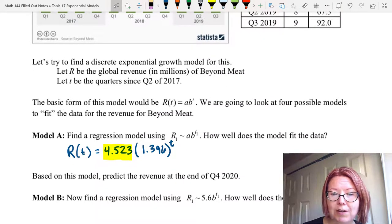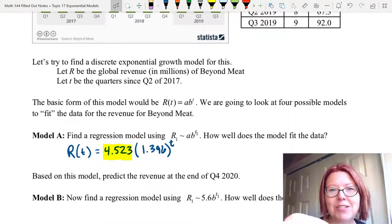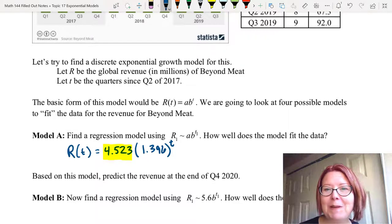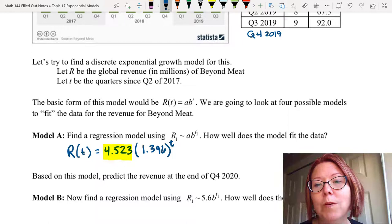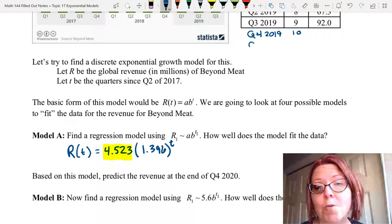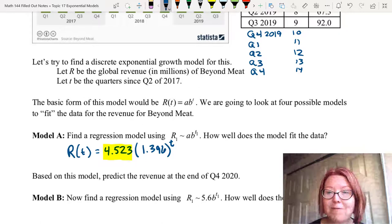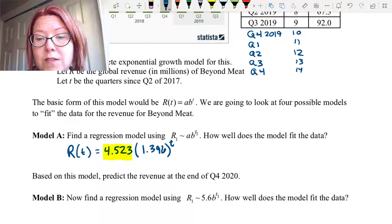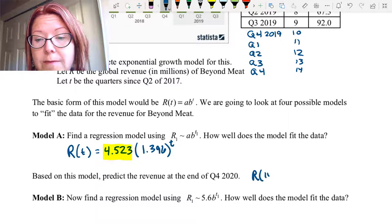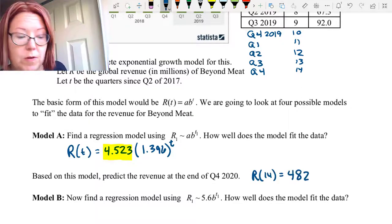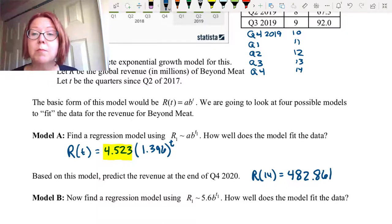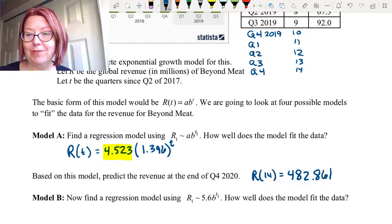In fact, we're going to predict the revenue at the end of quarter 4 2020. And you may want to run the table down just a little bit more to see what value of t that would be. Quarter 4 of 2019 would be t value of 10. So then we would go quarter 1 of 2020, quarter 2 of 2020, quarter 3 of 2020, and quarter 4 of 2020, which would be times of 11, 12, 13, and 14. So we're really looking for values for R of 14. So here we would calculate capital R of 14, which gives us $482.861 million in revenue for the fourth quarter of 2020.